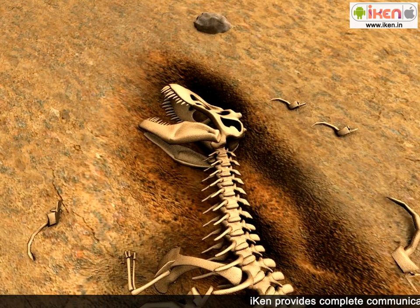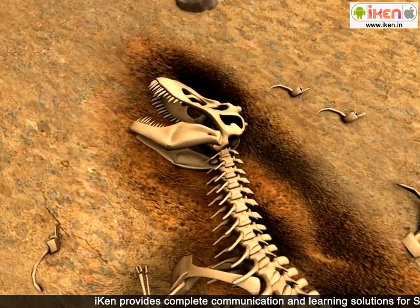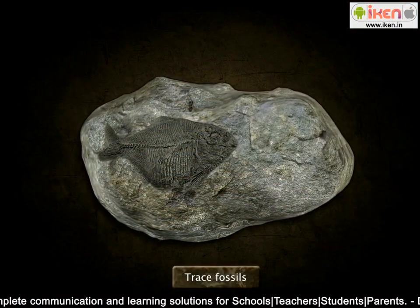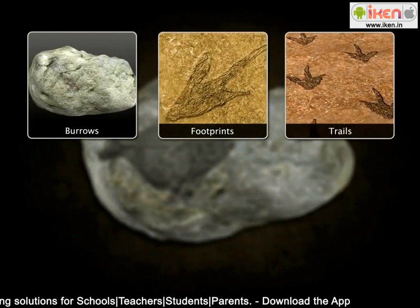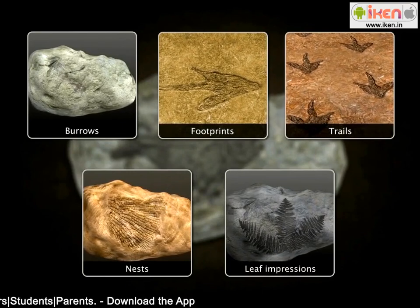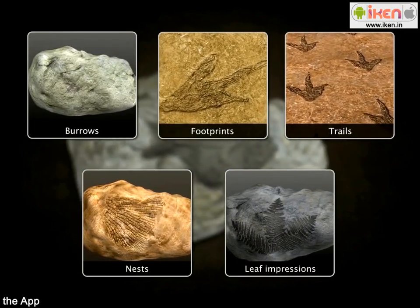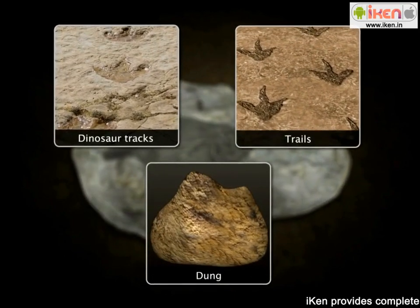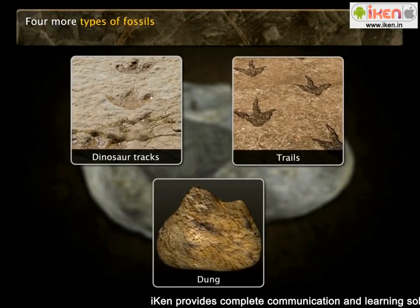Most body fossils are made when an animal dies and falls or is washed into a stream and is covered with mud. Trace fossils are impressions made by organisms. These include burrows, footprints, trails, nests, as well as leaf impressions. Trace fossils are signs of plant and animal activity preserved in rock — for example, dinosaur tracks, trails, and dung are all trace fossils.